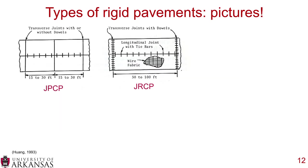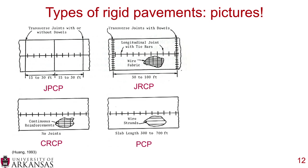Looking at pictures: JPCP has transverse joints without dowels; JRCP has transverse joints with dowels and may include wire fabric; CRCP has continuous reinforcement with no joints; and PCP has wire strands embedded in precast panels. These images are from the textbook Pavement Analysis and Design by Huang, 1993.